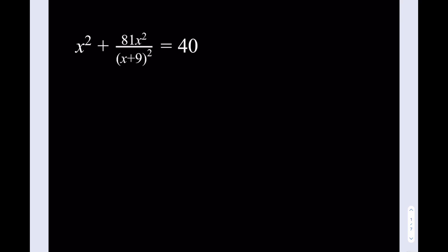Hello everyone, in this video we're going to be solving an equation. We have x squared plus 81x squared divided by x plus 9 squared equals 40. I'll try to present two methods here.